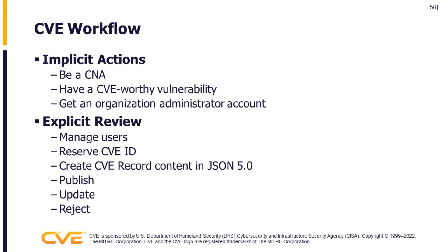As we discussed earlier, the CVE JSON 5 format — and particularly Vulnogram from Chandon — supports a lot of content that is not part of the minimal record. So this is not going to be an in-depth content creation exercise. We'll have some ready-made content, do some light edits, and then publish, update, and reject those records.